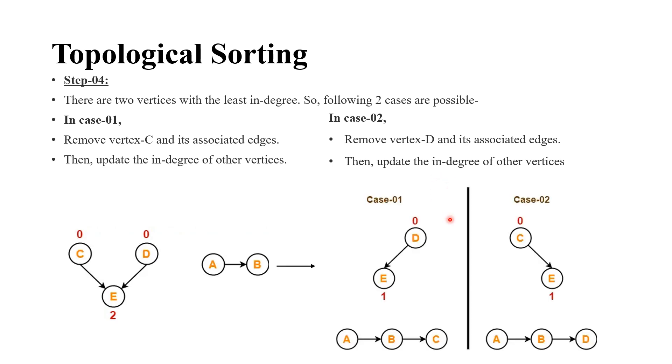Both the cases are reflected here. So, this is the case one where C has been removed and indegree is updated. So, for D, it is 0 and for E, it is 1. Here D has been removed and for C, indegree is 0 and for E, it is 1.